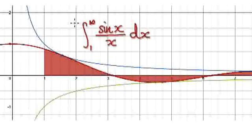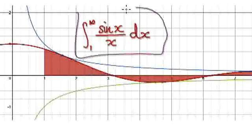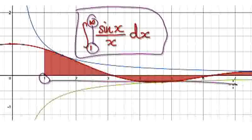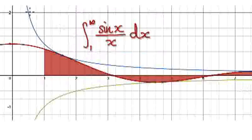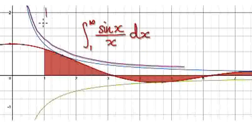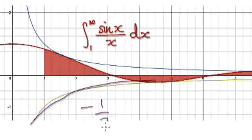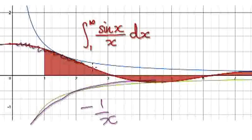Let's give you guys some more practice. Determine if this integral will converge or if it will diverge, from 1 to infinity. So this is your 1 over x graph, and this is your negative 1 over x graph.